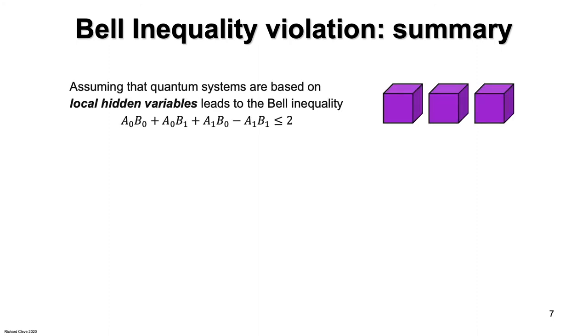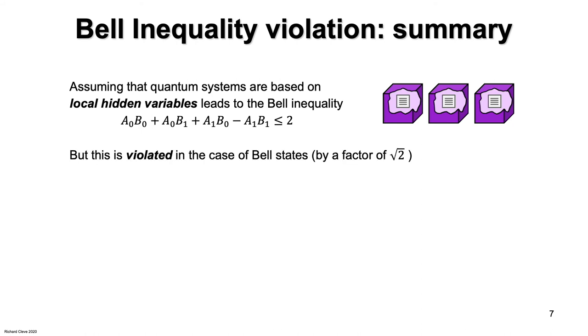Let's summarize the Bell inequality and its violation. Assuming that the measurement outcomes of quantum systems are predetermined by local hidden variables leads to the Bell inequality. But actual quantum systems violate this inequality by a factor of root 2.